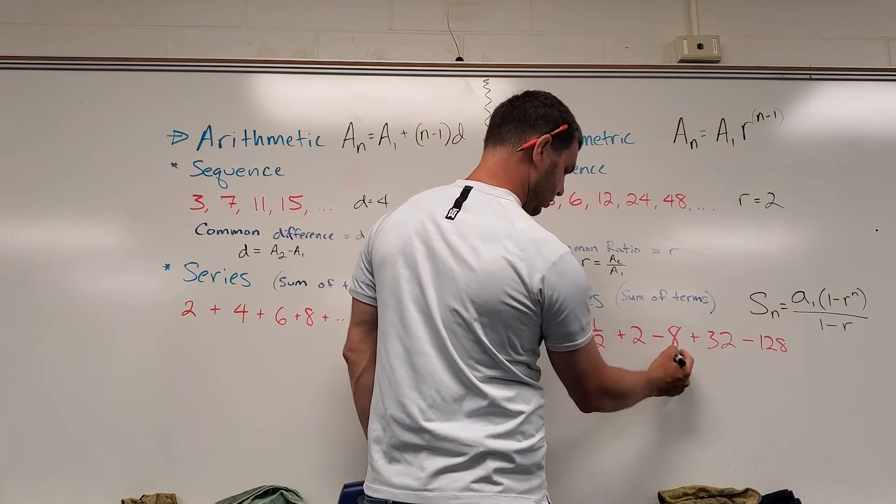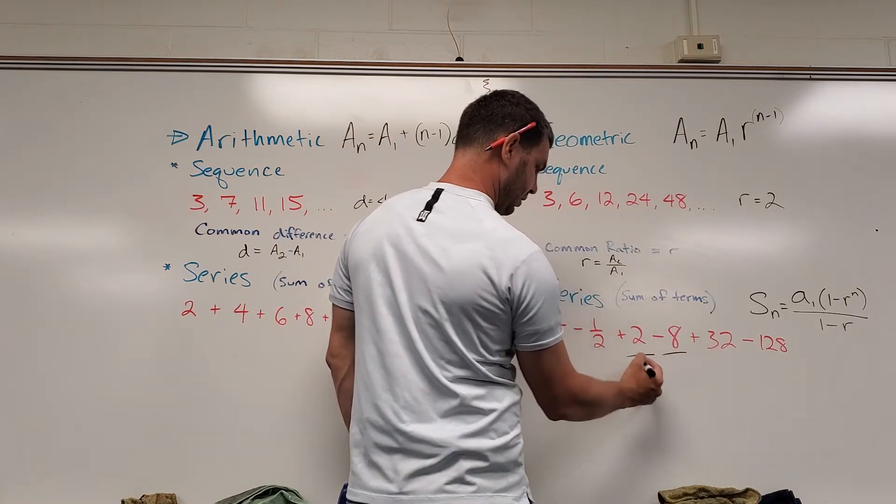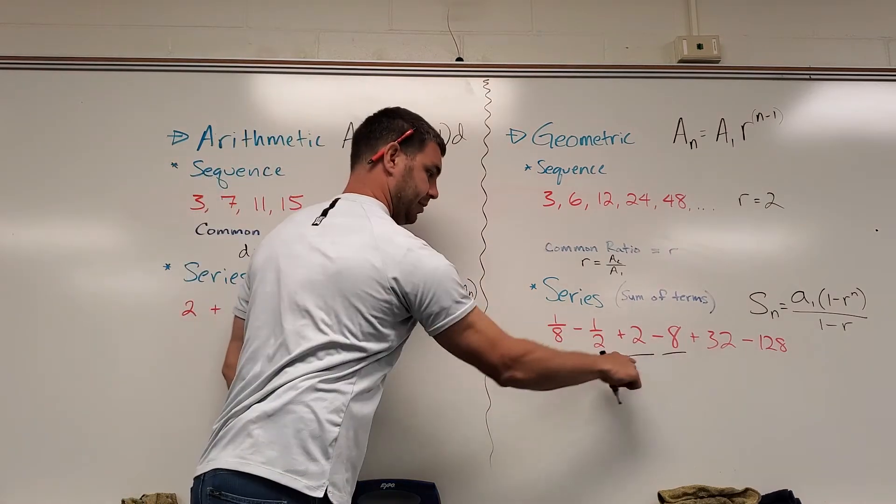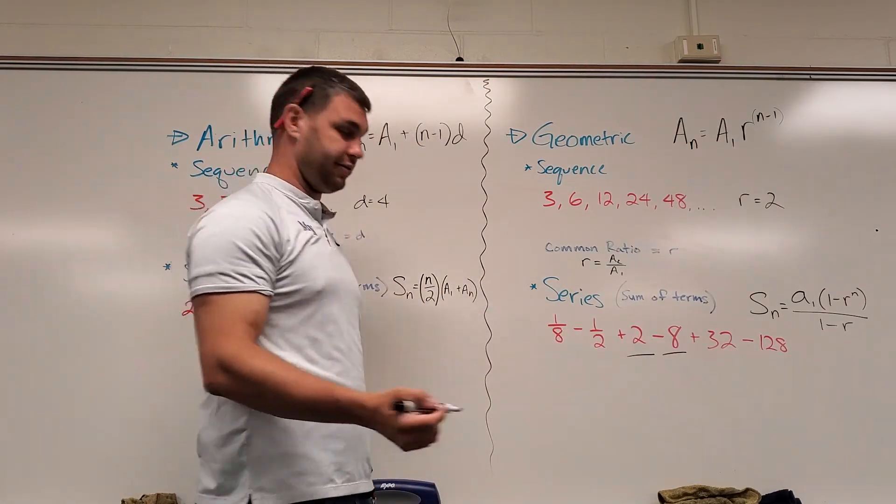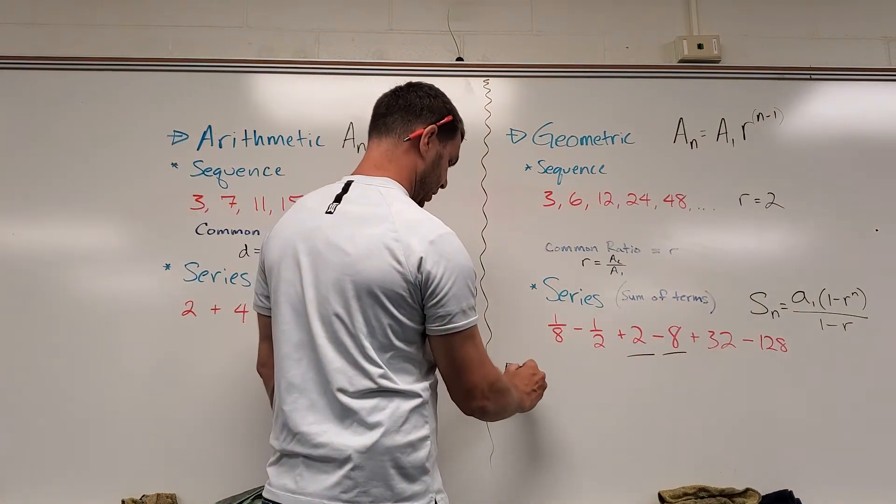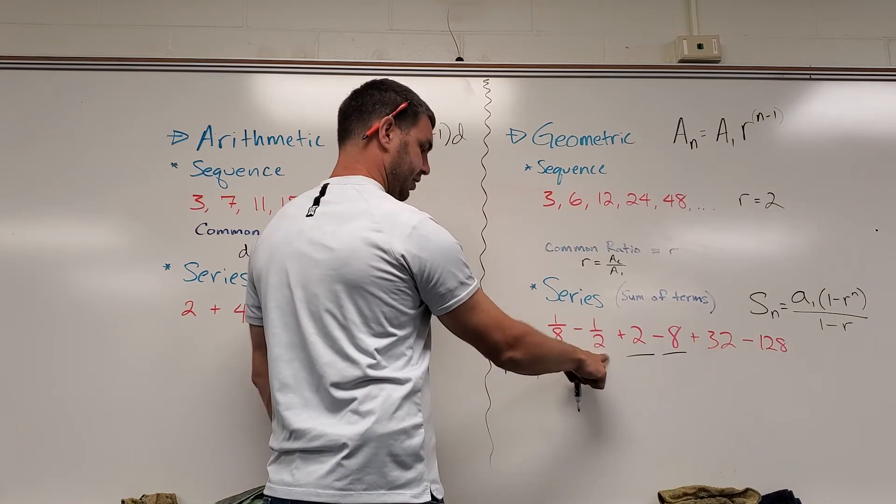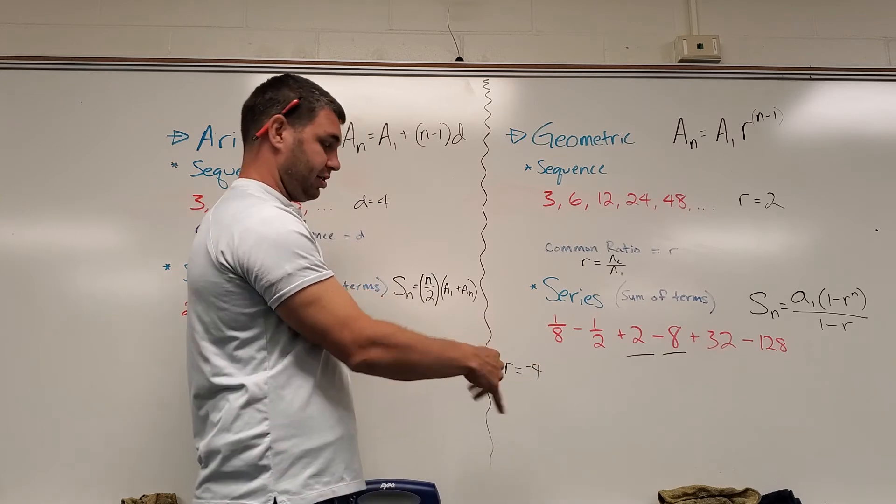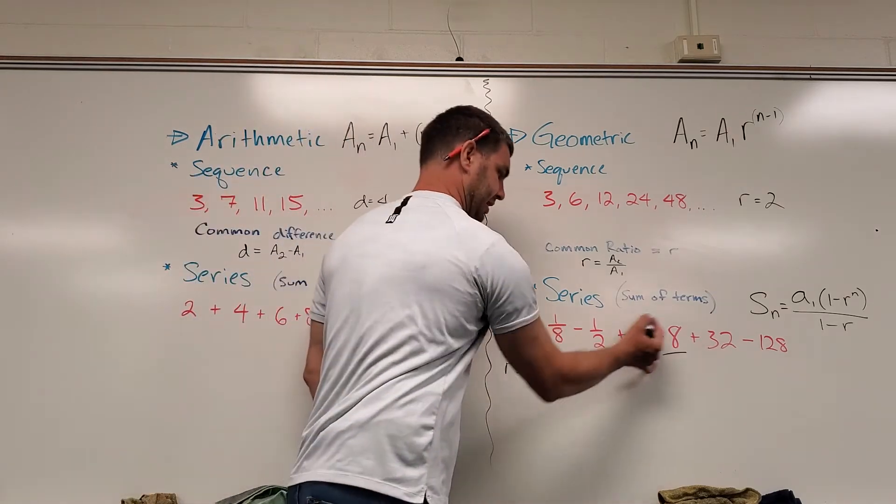So what if I take two more reasonable ones? Negative 8 divided by 2—negative 8 divided by positive 2 is negative 4, right? So r is negative 4. That would also work here: negative 1/2 divided by positive 1/8 is also negative 4. I think it's just a little bit easier to see it with those two terms.